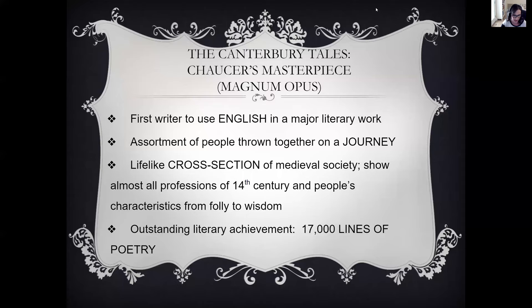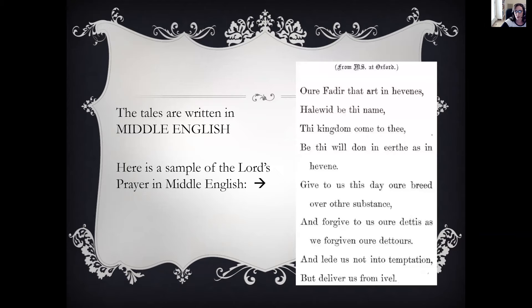The story is set in April 1387 at the Tabard Inn in London, England — which is a real place, making that part of the story fact. He sets his story in a real place, in a real time, with real lifelike people and things that would have happened. It's a cross-section of medieval society; in this tale he shows almost all the professions of the 14th century and people's characteristics from folly to wisdom. It is 17,000 lines of poetry written in Middle English.